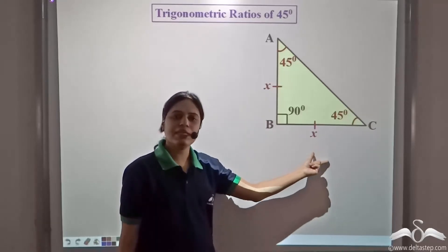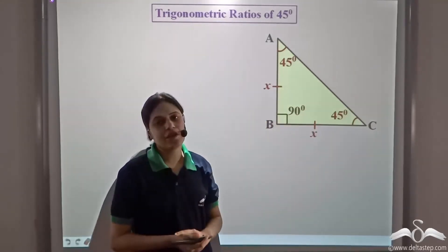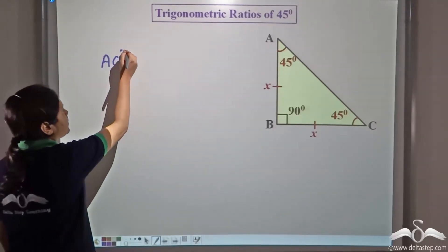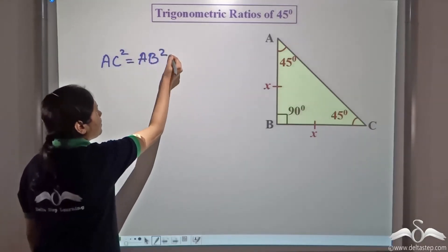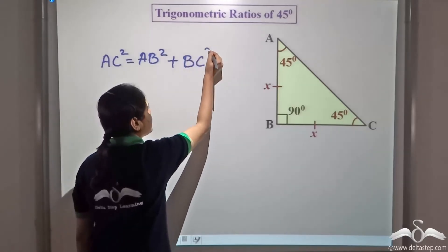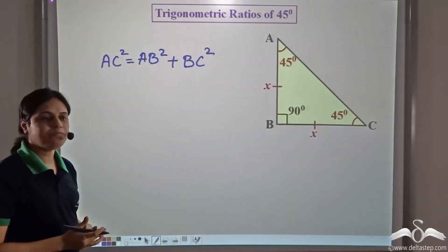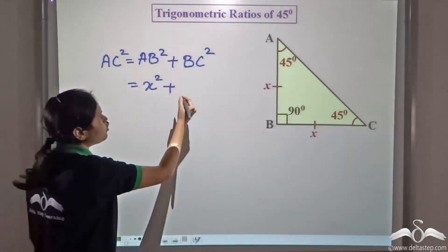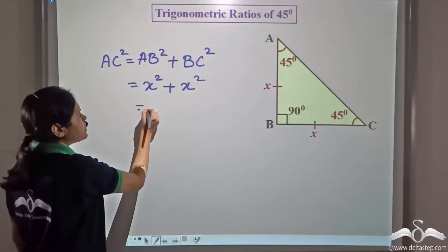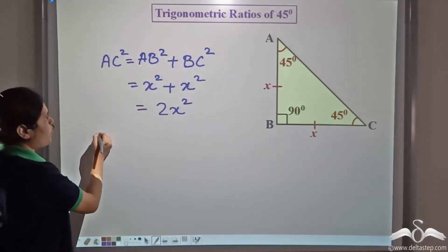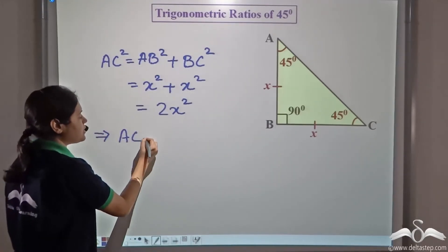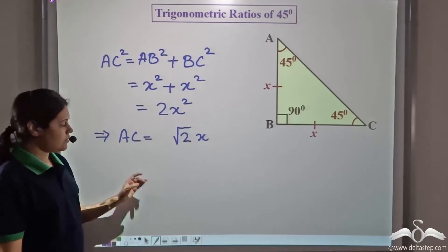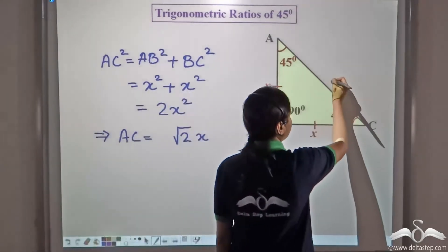Since we know AB and BC, we can find AC using the Pythagorean theorem. We have AC squared equals AB squared plus BC squared. AB squared is X squared and BC squared is also X squared, so AC squared equals 2X squared. Therefore, AC equals the positive root of that, which is root 2 times X.